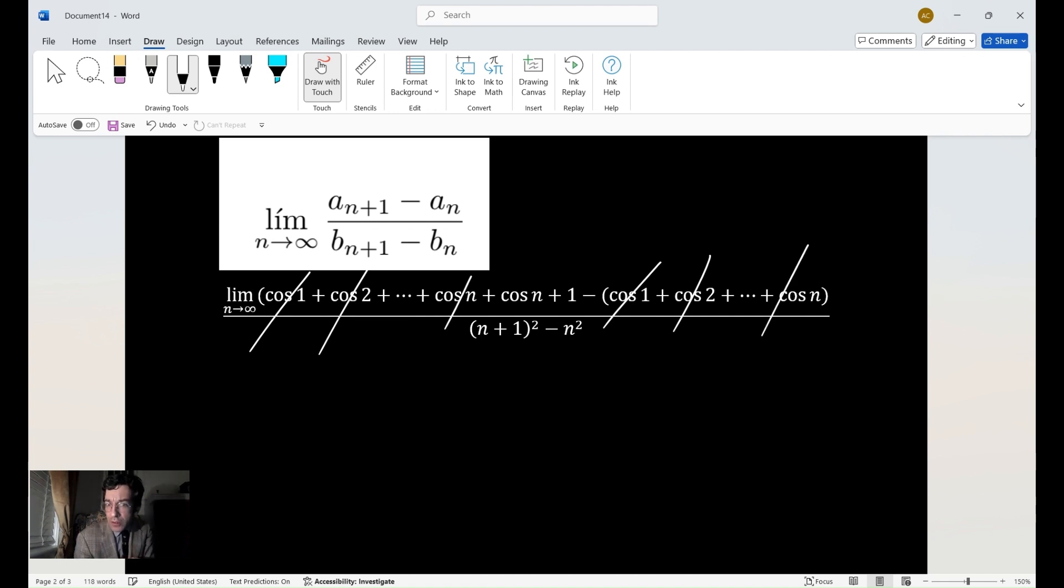And now we have the limit as n approaches infinity of the cosine of n plus 1 divided by, now, notice in the denominator here,